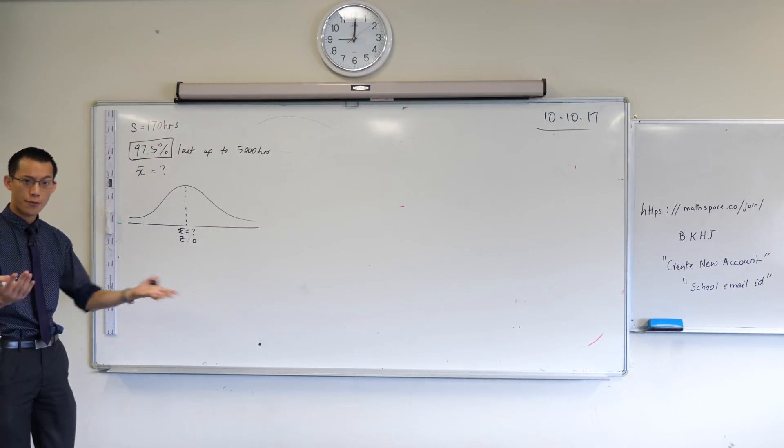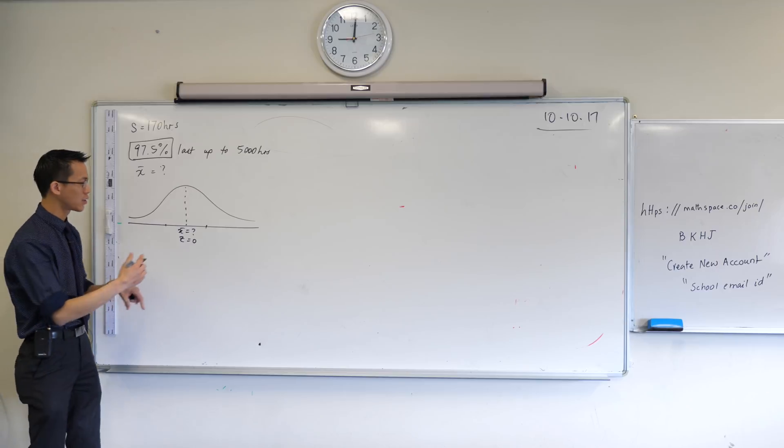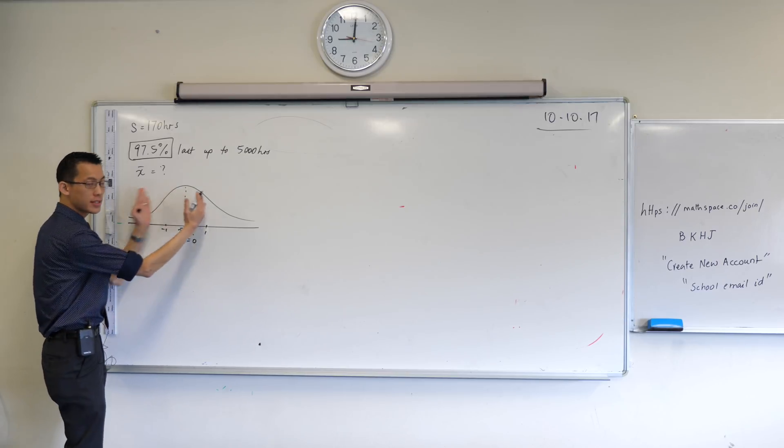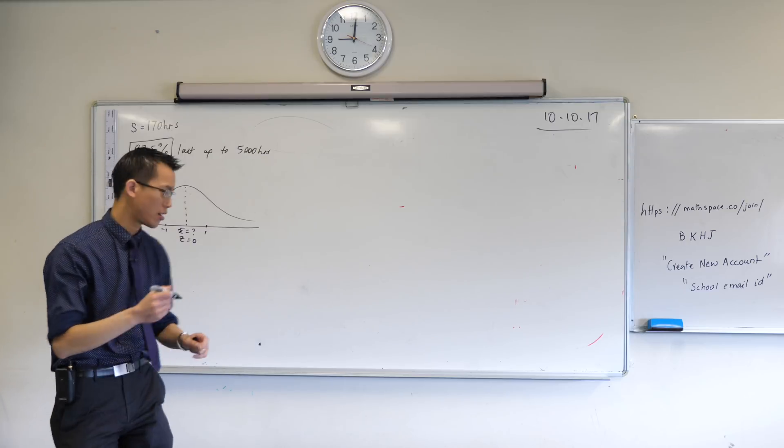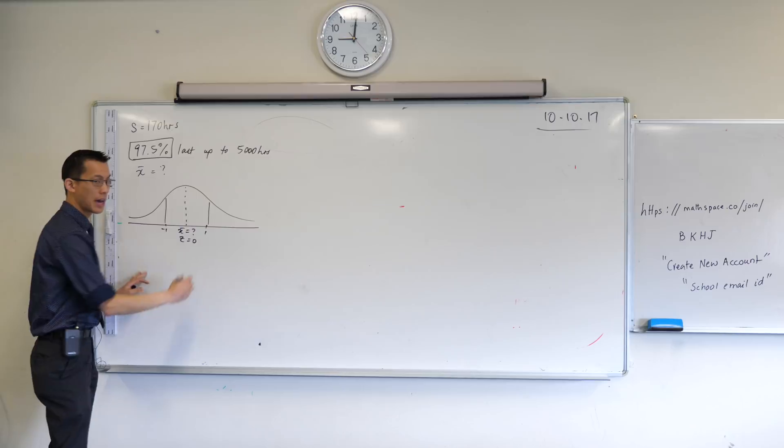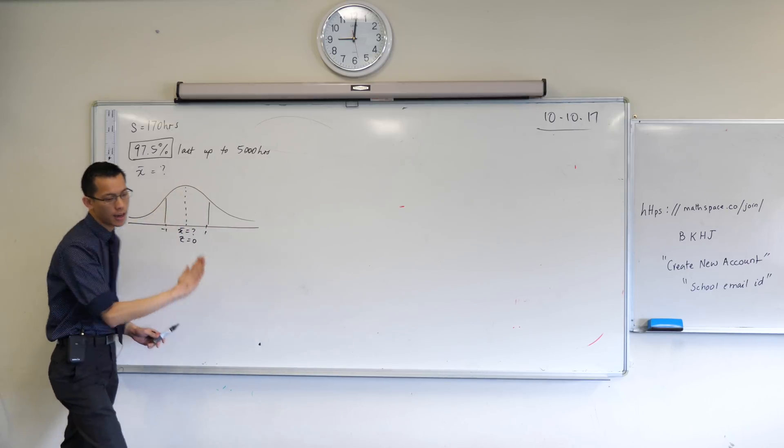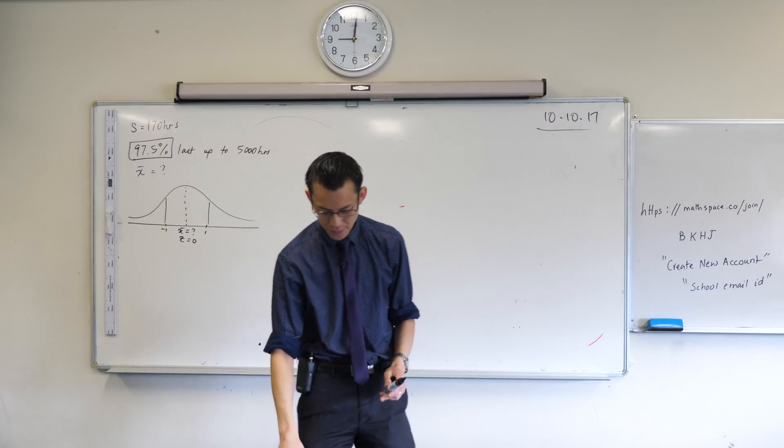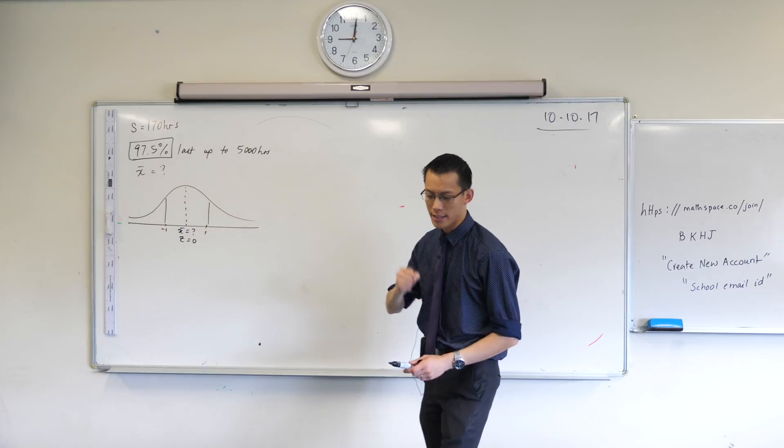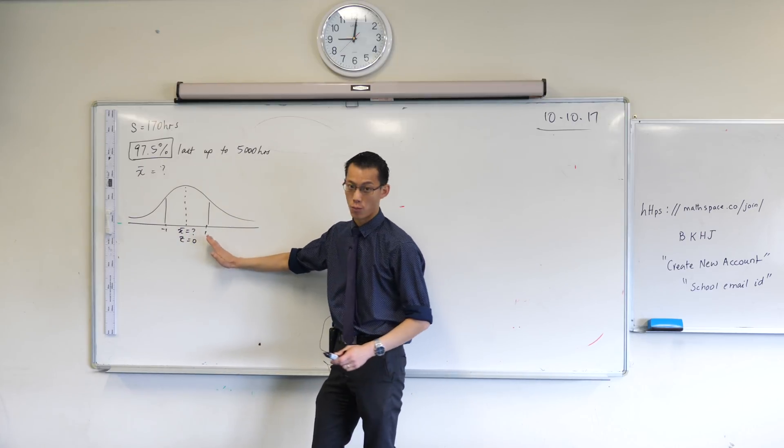For instance, just as a bit of revision, if you have a look at z-scores between negative one and one, so if you go one standard deviation away, how much of the population have you captured? Well, the formula and data sheet tells you that this section in here is 68%. The exact wording says approximately 68% of scores have z-scores between negative one and one.